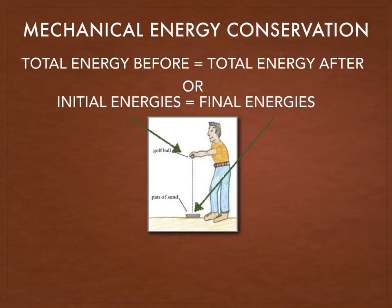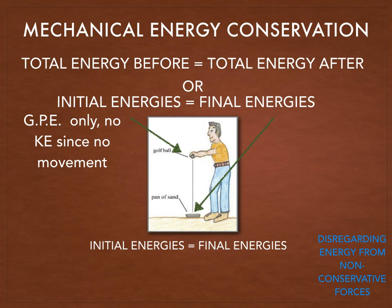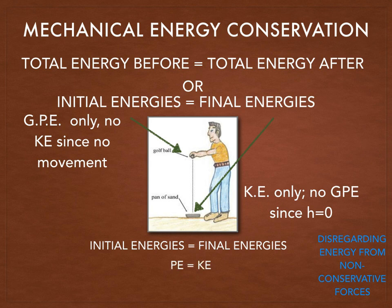Let's go back to our diagrams. If we do not consider non-conservative forms of energy, we only consider gravitational potential energy at the top and kinetic energy at the bottom. So we have PE equals KE. Since the formula for potential energy is mgh and kinetic energy is ½mv², the formula becomes: mgh equals ½mv².